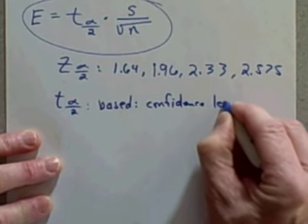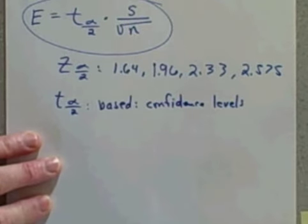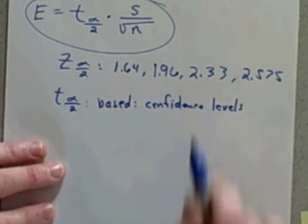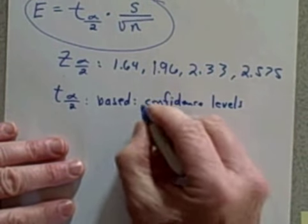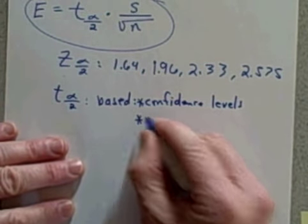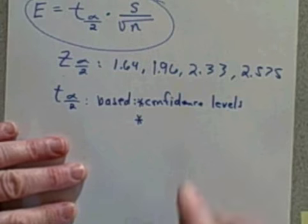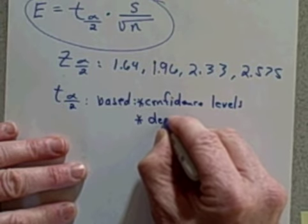Okay, but for each one of these confidence levels, it's also based on the number of degrees of freedom. Now you probably don't remember what the degrees of freedom is, so let me go through this again.